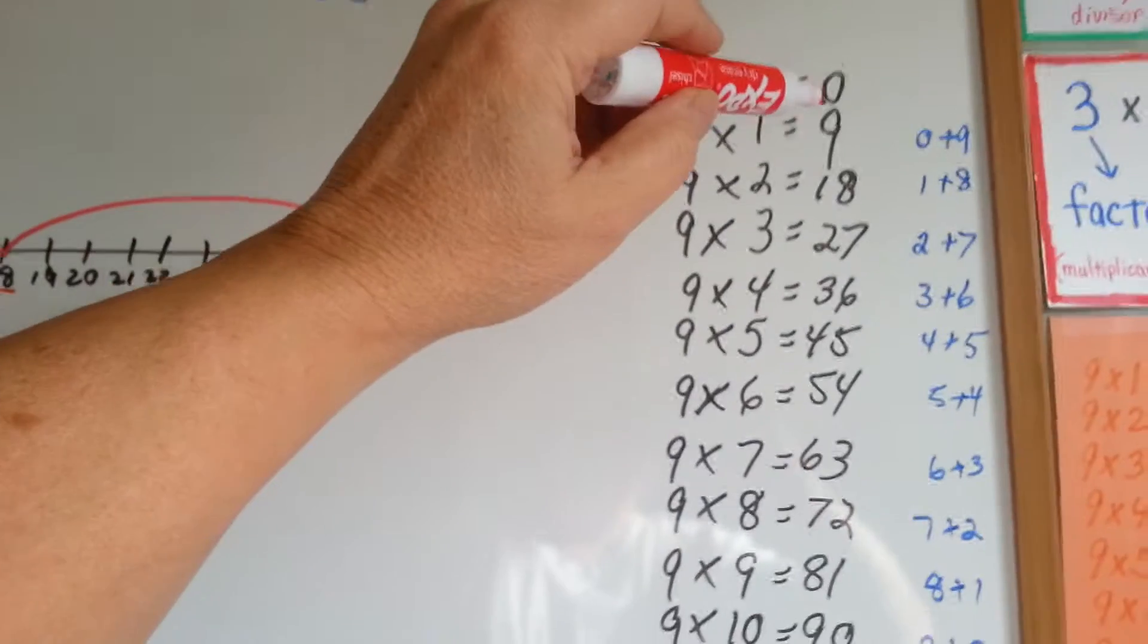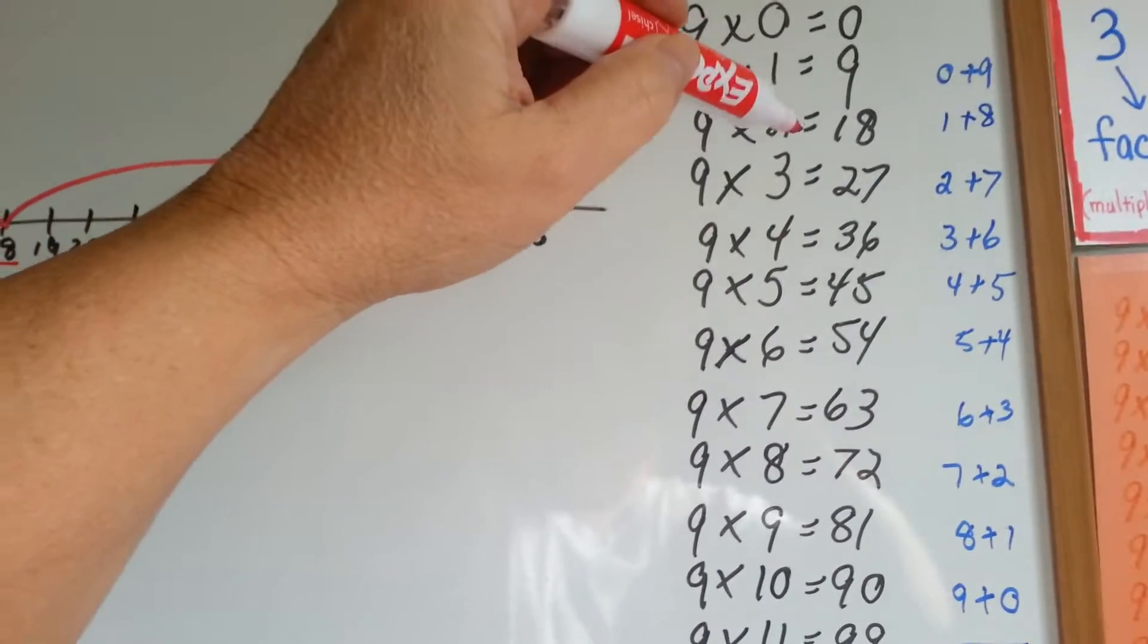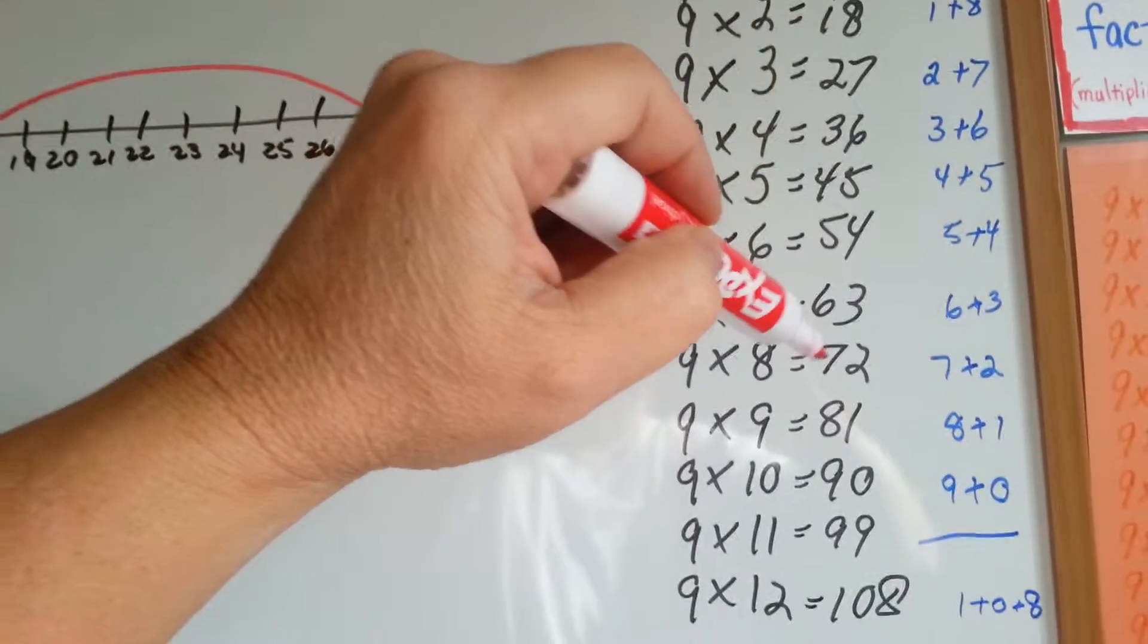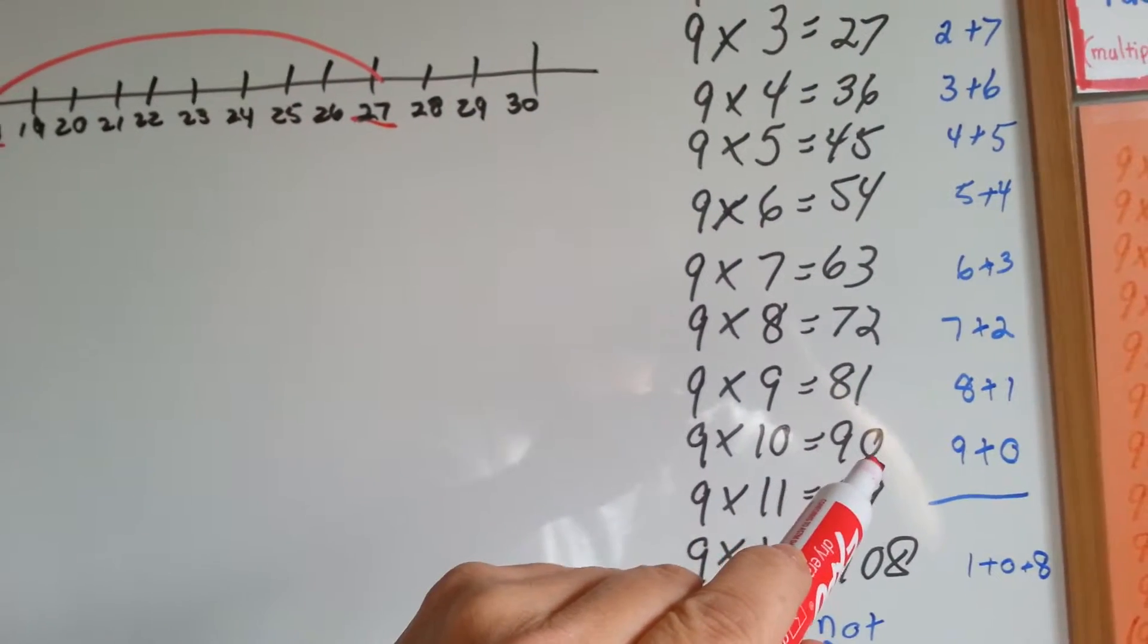Now, when you look at the answers, have you noticed something else that's weird about the 9 times table? Well, when you get to 9 times 2, it goes 1, 2, 3, 4, 5, 6, 7, 8, 9 for 9 times 10.